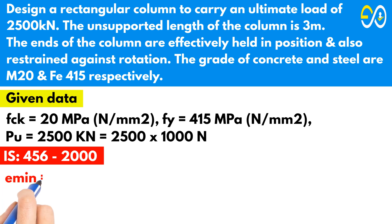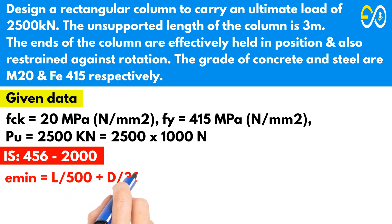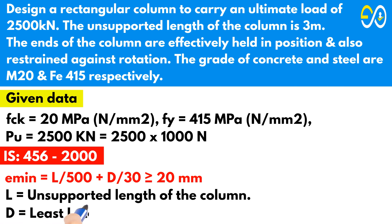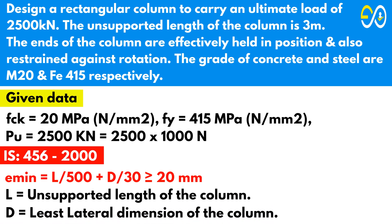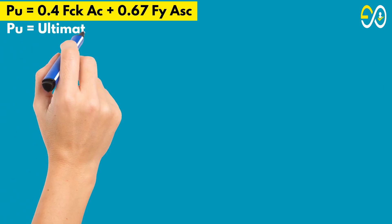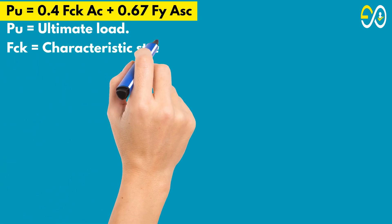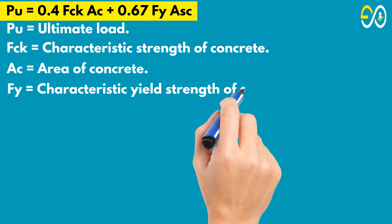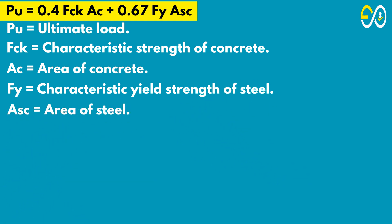Minimum eccentricity equals L upon 500 plus D upon 30, should be greater than or equal to 20 mm, where L equals unsupported length of the column and D equals least lateral dimension of the column. As per IS code, if the column satisfies minimum eccentricity, then the ultimate load will be: Pu equals 0.4 times fck times Ac plus 0.67 times fy times Asc. Here Pu equals ultimate load, fck equals characteristic strength of concrete, Ac equals area of concrete, fy equals characteristic yield strength of steel, Asc equals area of steel.